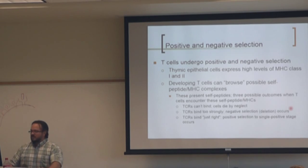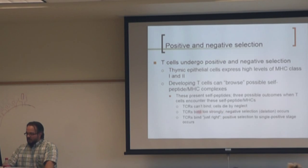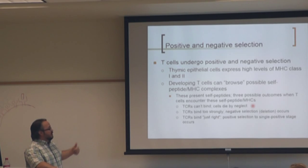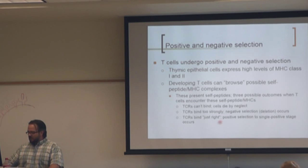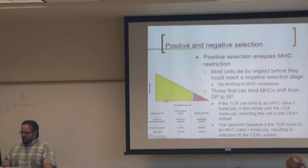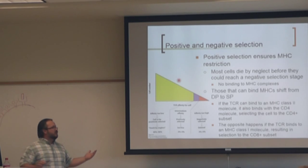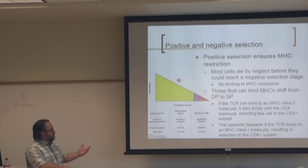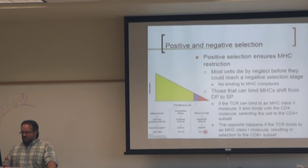T cells have one of three possible outcomes: if the T cell receptor can't bind to anything, the cell dies by neglect — no signaling occurs. If it binds too strongly, negative selection occurs and it's deleted. If it binds just right — positive selection — it acquires restriction to self-MHC molecules. The great majority don't recognize self-MHC and will die. About 2 to 5% will recognize self-MHC with some degree of binding but not too strongly, and those survive. Those that bind too strongly are deleted.